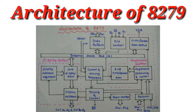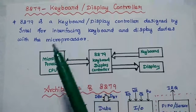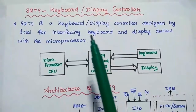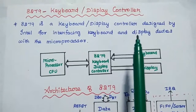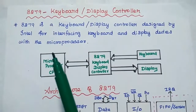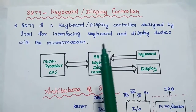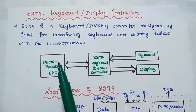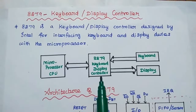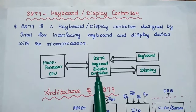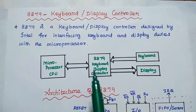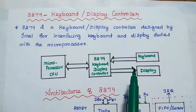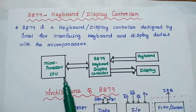Now we are going to discuss the architecture of the 8279 keyboard display controller. The 8279 is a keyboard display controller designed by Intel Corporation for interfacing keyboard and display devices with the microprocessor. This is the diagrammatic representation of 8279 for interfacing the keyboard and display with the microprocessor.